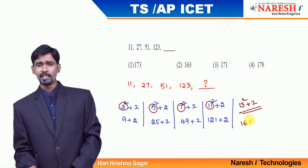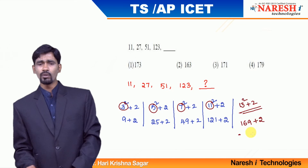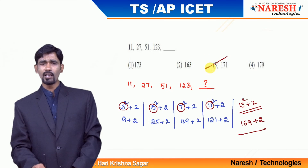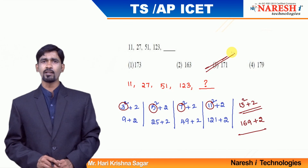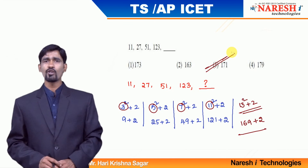What is 13 squared? It is 169. 169 plus 2 is going to be 171. It is available as option 3 — mark it as your answer. Thank you so much.